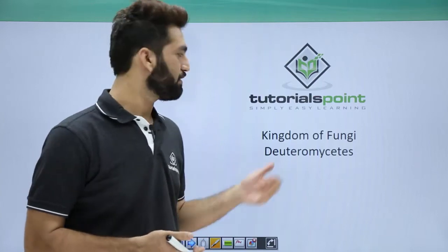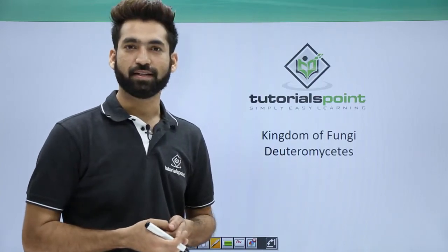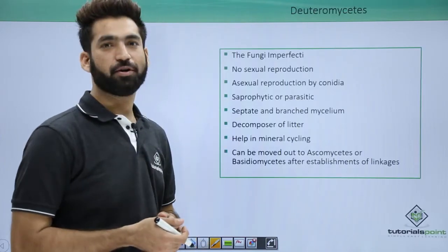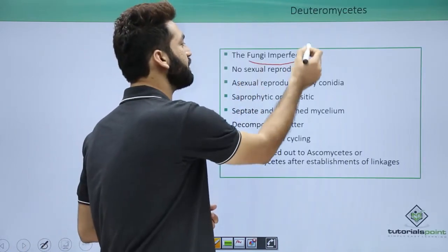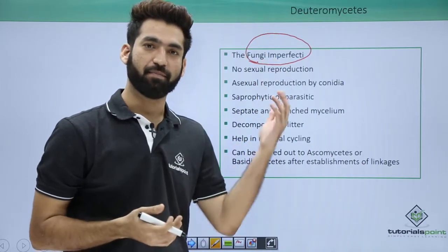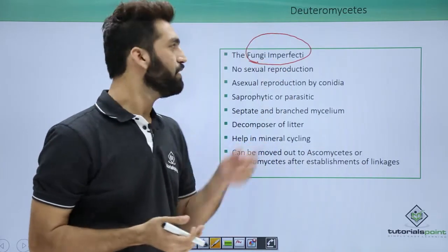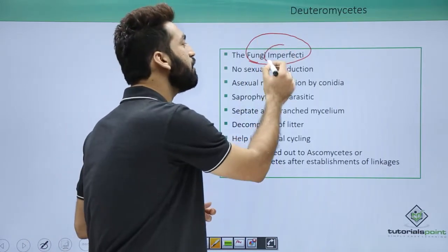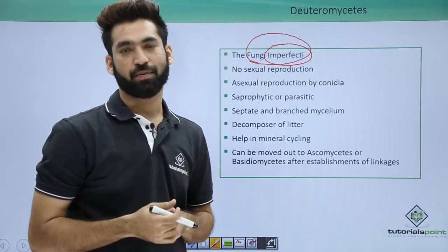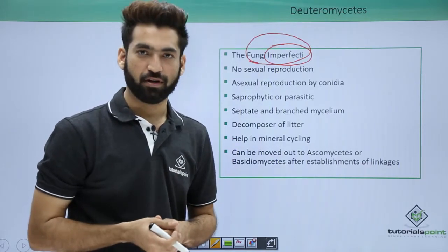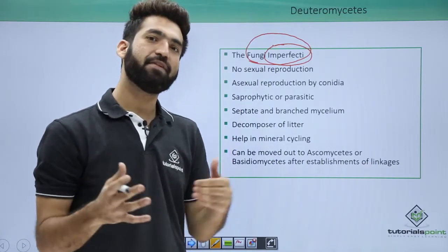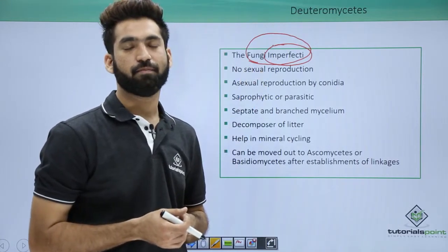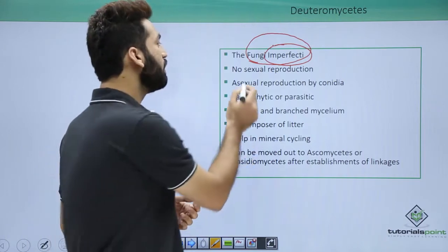In this session we'll be discussing one important class of fungus: Deuteromycetes. Deuteromycetes are called fungi imperfecti — a very important common name that is frequently asked in exams. They are called fungi imperfecti because of the imperfect stage of reproduction; they don't show sexual reproduction, which is why this common name applies.